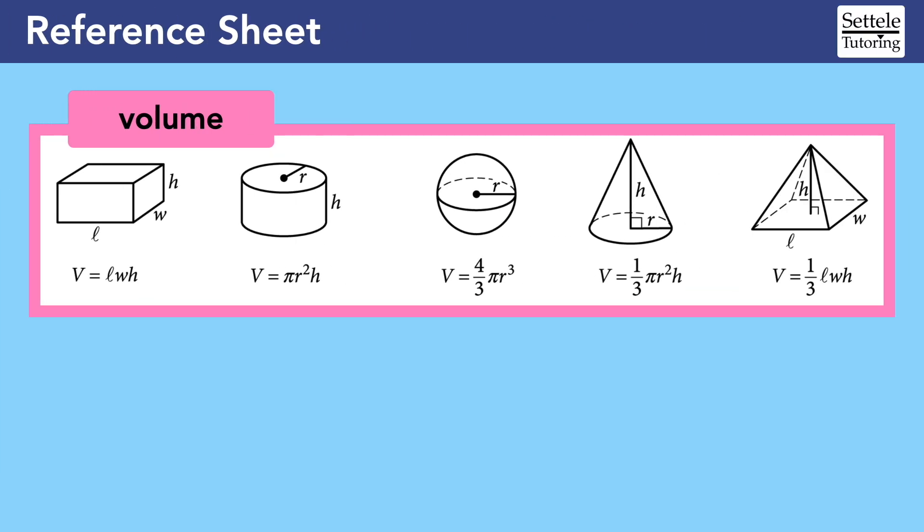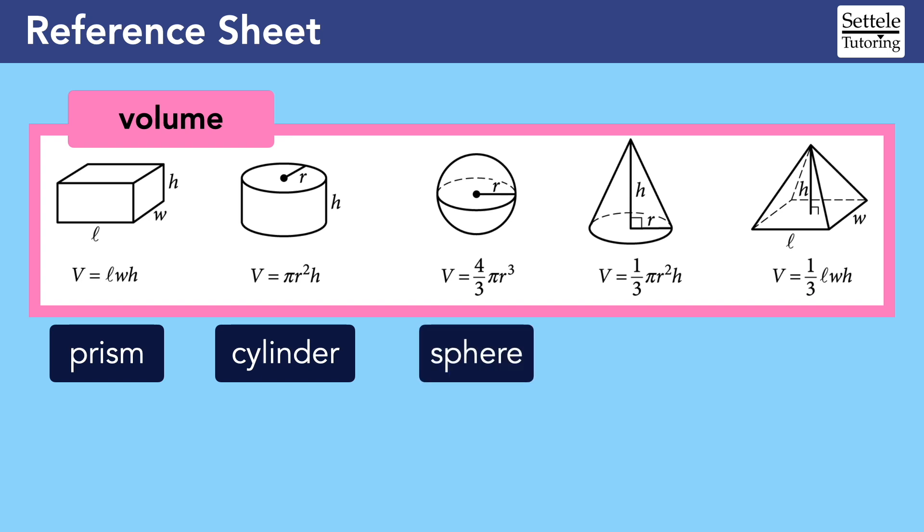The reference sheet very generously gives us the volume formulas for the most common three-dimensional shapes. First, let's make sure we know the names of the shapes. Starting on the left, I'm going to give you a more fancy name for each shape as the more basic name appears below. First, we have a right rectangular prism. Second is a right circular cylinder. Then, a sphere is just a sphere. Next is a right circular cone. And finally, a right rectangular pyramid.